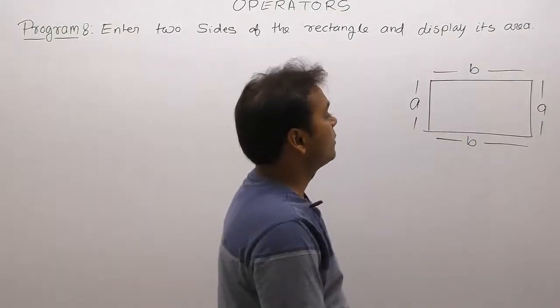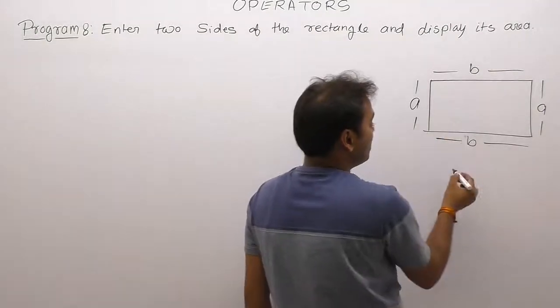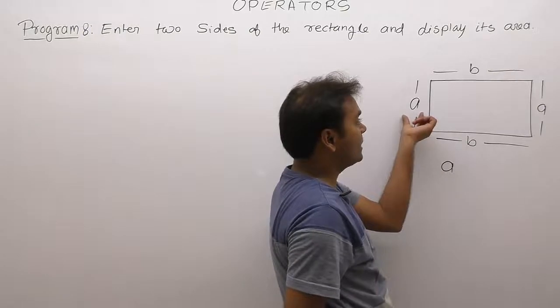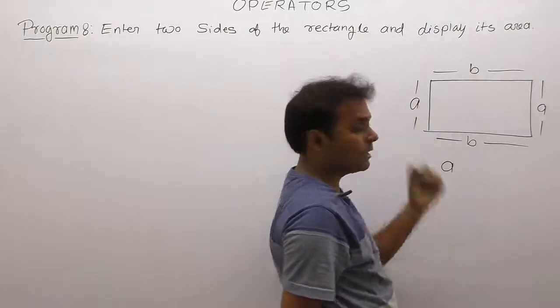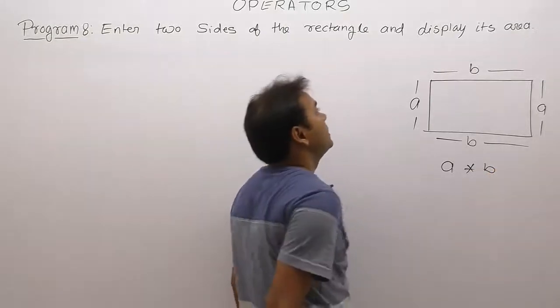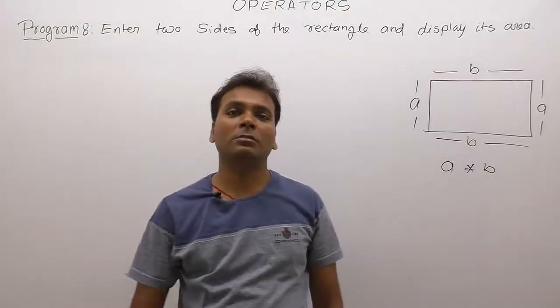As we know what is the area of rectangle. Area of the rectangle is nothing but it is a multiplication of two sides. Means here side is if side is X or Y or A and B, then its area is similar to A multiplied by B. Here area of the rectangle is nothing but it is simply multiplication of two numbers.